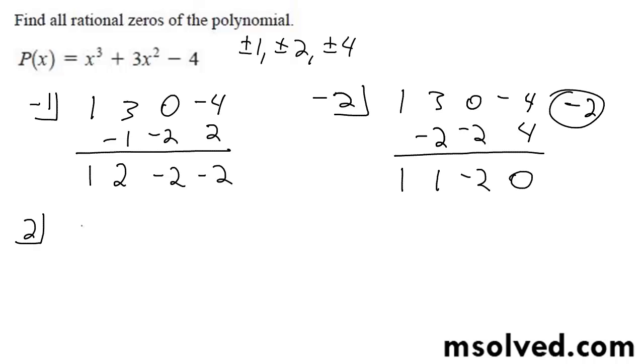I'll try 2. 1, 3, 0, negative 4. So I get 1, 2, 5, 5, 10. I get 6. That's not a solution.